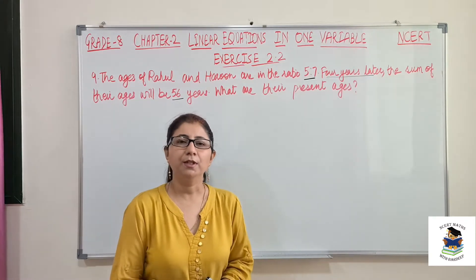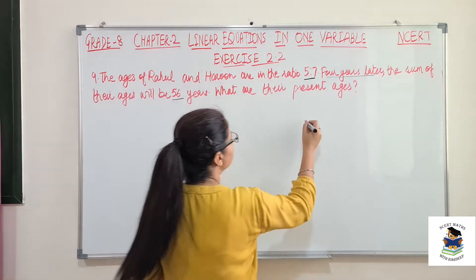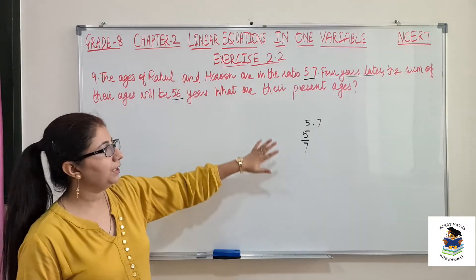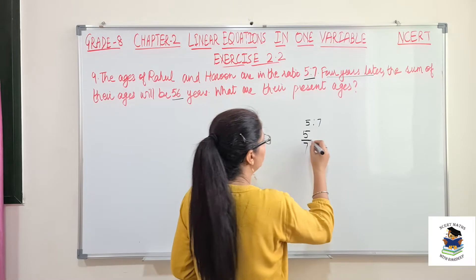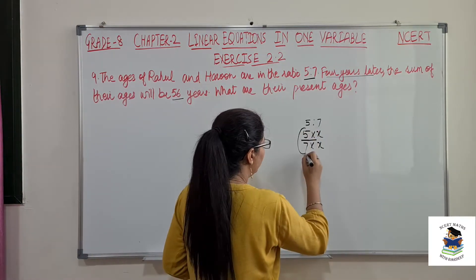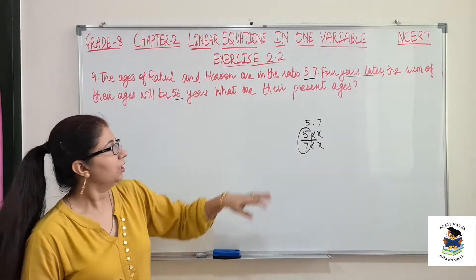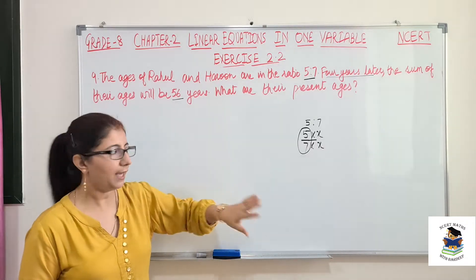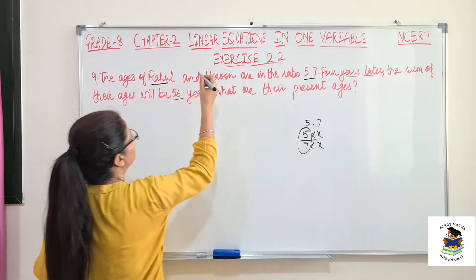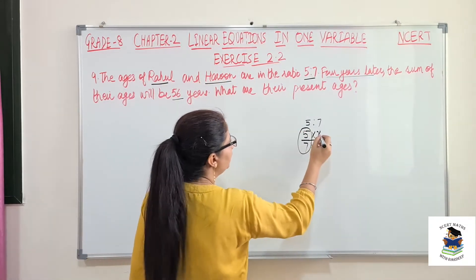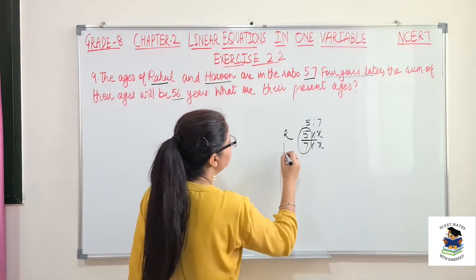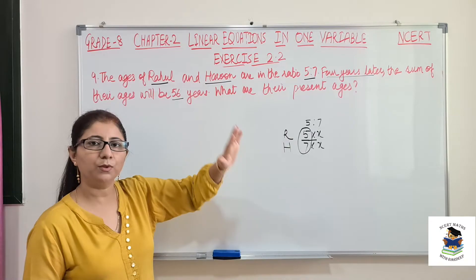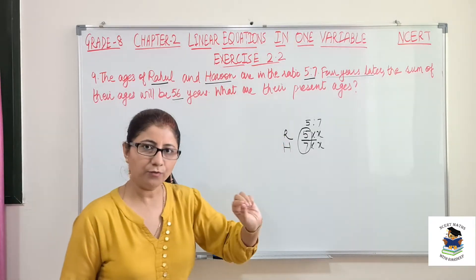As I already mentioned in my previous question, whenever a ratio is given — here it is 5 by 7 — there should be some common multiple that can be cancelled and simplified. So for this type of question, whenever ratio is given, we will take both values in the form of x. So Rahul's age will be taken as 5x and Haroon's as 7x, because when we divide these ages we will get the ratio 5 by 7.